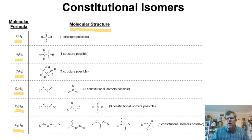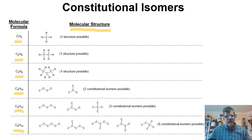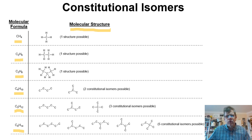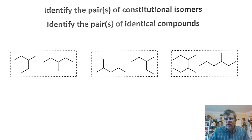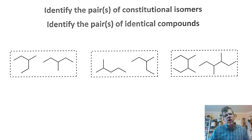I'm not going to go above six carbons when asking how many constitutional isomers a compound has, because it gets very complex very quickly. Let's look at how to identify pairs of constitutional isomers versus identical compounds. Here we see three pairs of compounds written in line structure — the carbon connectivities — and we want to identify which pairs are constitutional isomers and which are identical compounds.